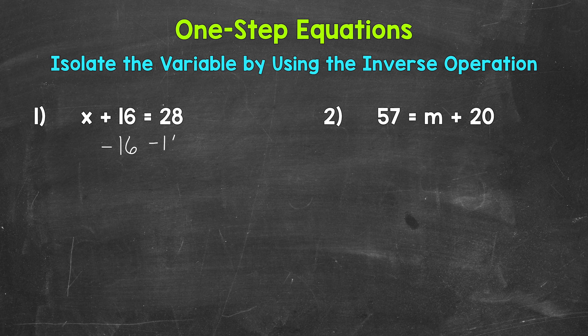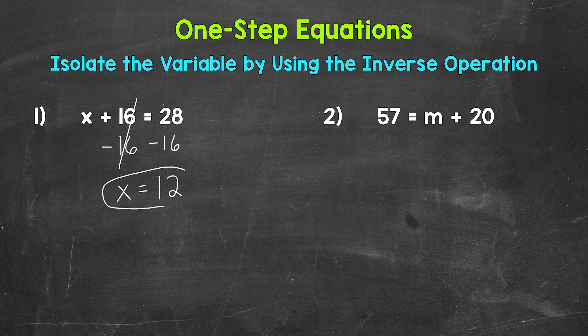So let's subtract 16 from the right side as well. On the left side of the equation, we are adding 16 and subtracting 16, so these 16s are going to cancel out — they equal 0. So our x is isolated now; it's all by itself. x equals, and then on the right side of the equation, 28 minus 16 equals 12. So x equals 12. That's our solution.